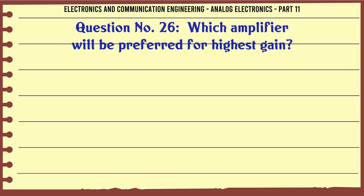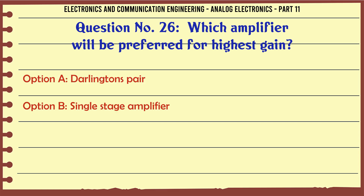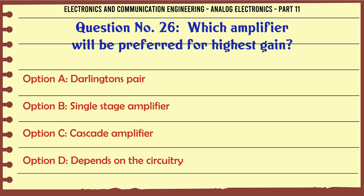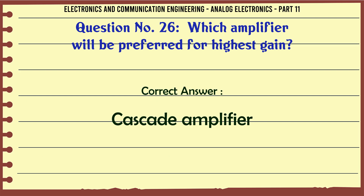Which amplifier will be preferred for highest gain? A. Darlington's pair. B. Single stage amplifier. C. Cascade amplifier. D. Depends on the circuitry. The correct answer is: Cascade amplifier.